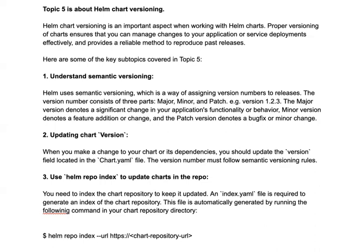For example, consider a version like 1.2.3. The major version denotes a significant change in your application's functionality or behavior — if there is a major change, you increment it from 1 to 2 to 3 and so on. A minor version denotes a feature addition or change to the existing application. The patch version is for applying a bug fix or a minor change. These three categories together form your overall semantic versioning, and the same approach is followed inside Helm as well.